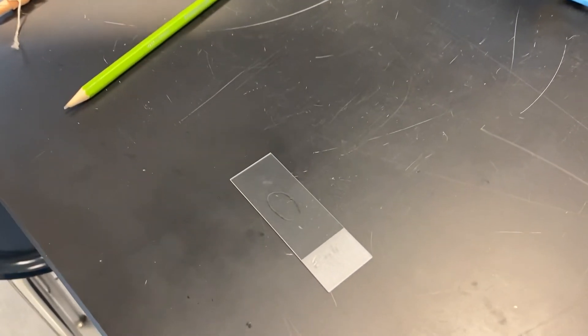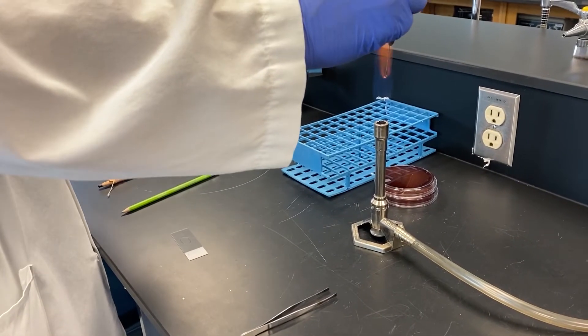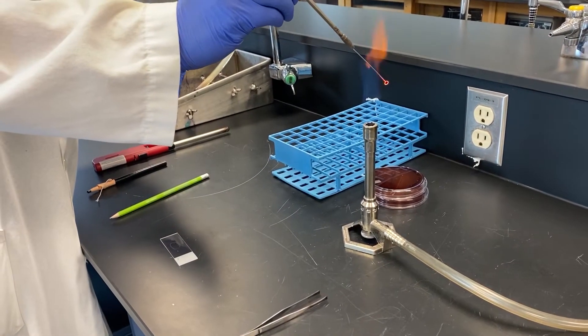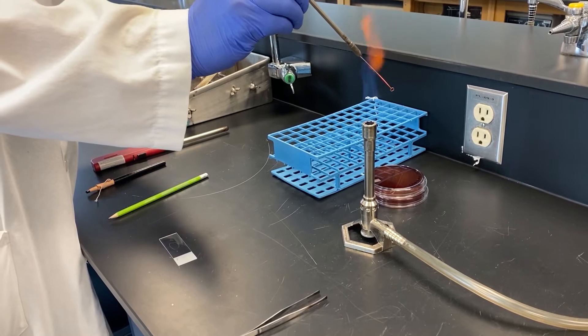Now we need to take the broth culture of bacteria and put it onto the slide. To do that we will use a metal loop. The first thing you need to do is sterilize the metal loop using your flame from your Bunsen burner. It's really important that you flame the entire loop from the top to the bottom until it's red hot.